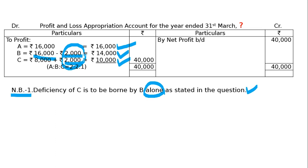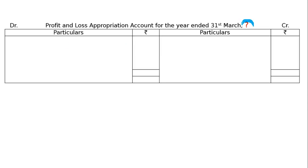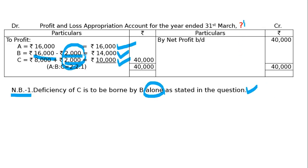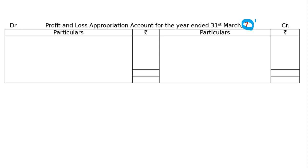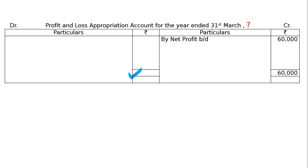Next one is the current year का profit and loss appropriation account. ये वाला था last year का — last year का मैंने समझाया. यहाँ पे last year का year लिखो. Same profit and loss appropriation account का format बनाओ, यहाँ पे लिखो current year. Format is ready. Current year profit brought down: 60,000 credit side का total — debit side में उतारो 60,000.